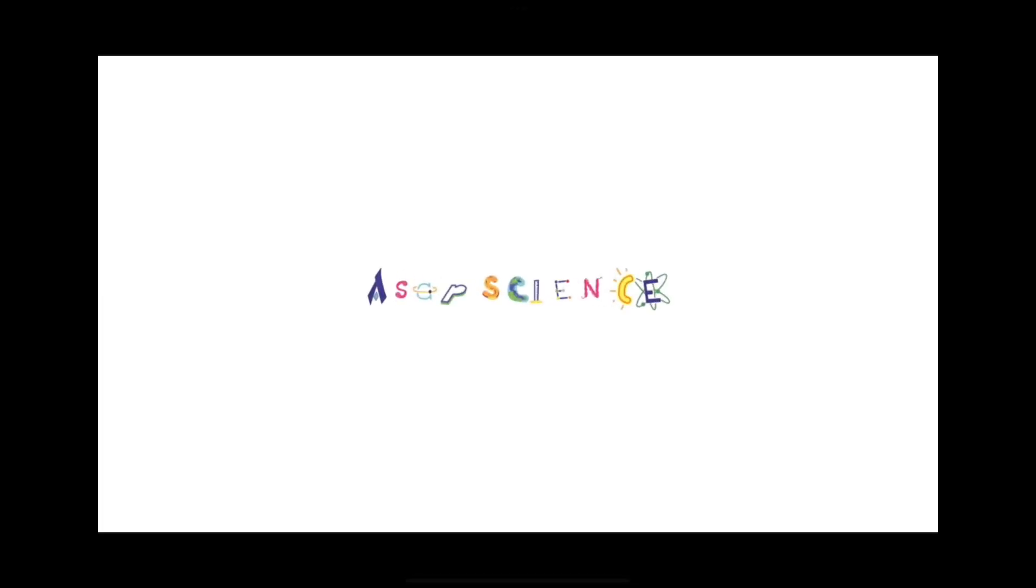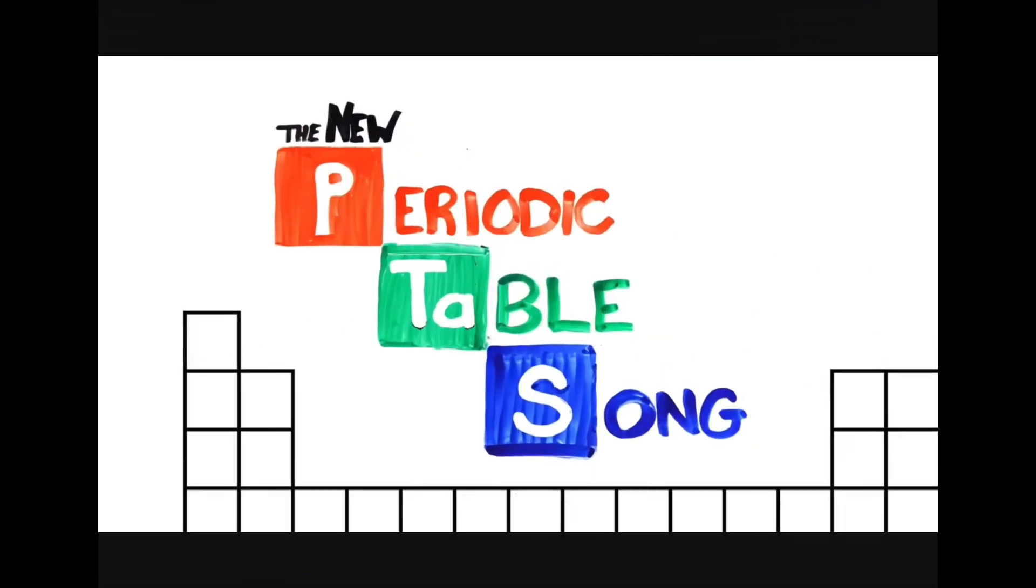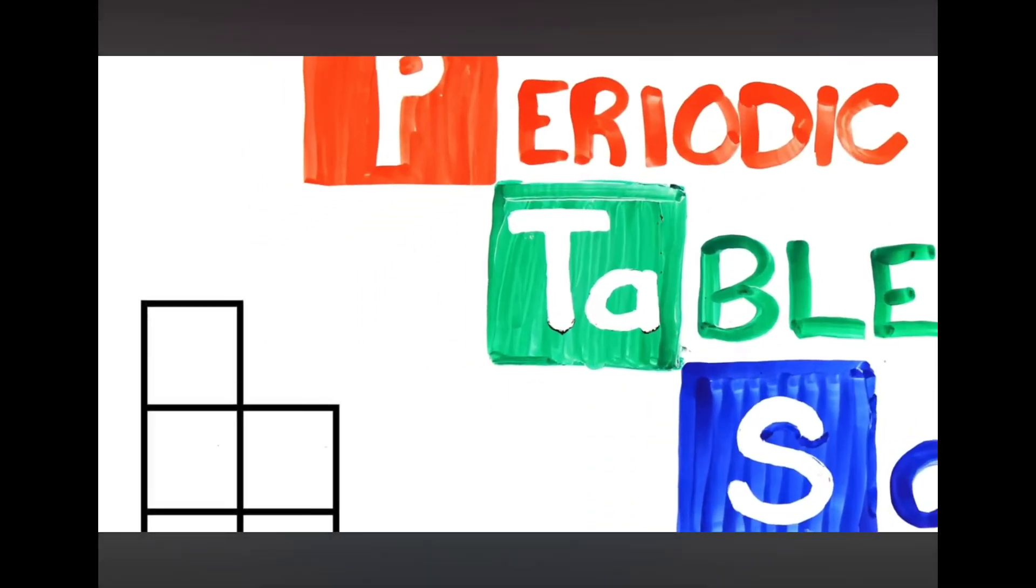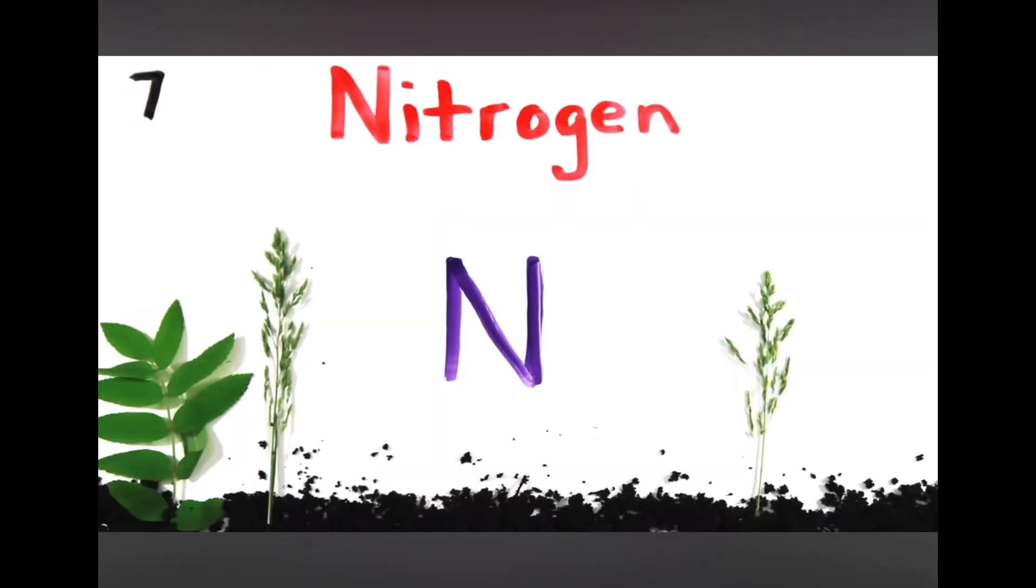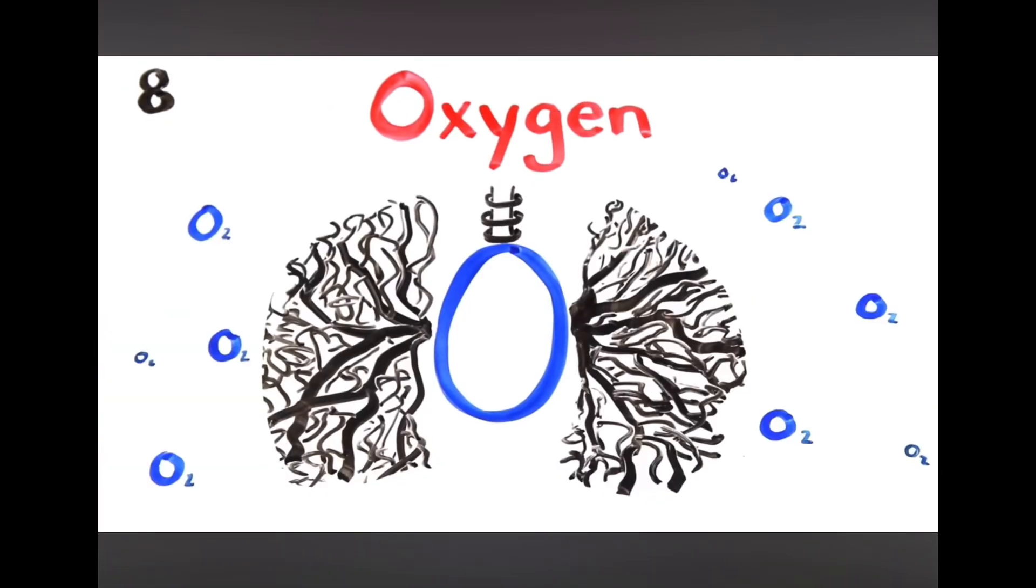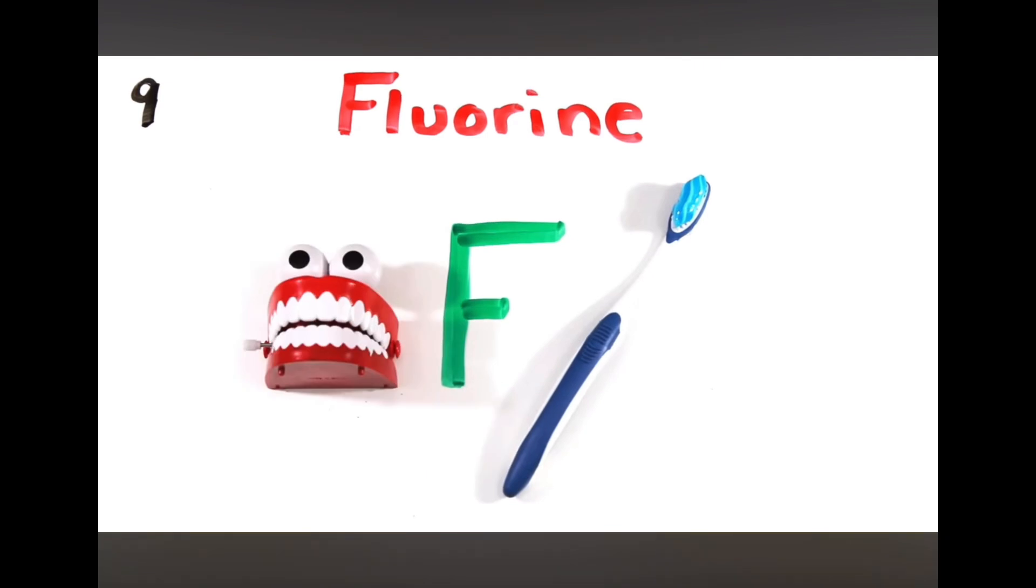And now, ASAP Science presents the elements of the Periodic Table! There's hydrogen and helium, then lithium, beryllium, boron, carbon, and nitrogen all through the air, with oxygen so you can breathe and fluorine for your pretty teeth.